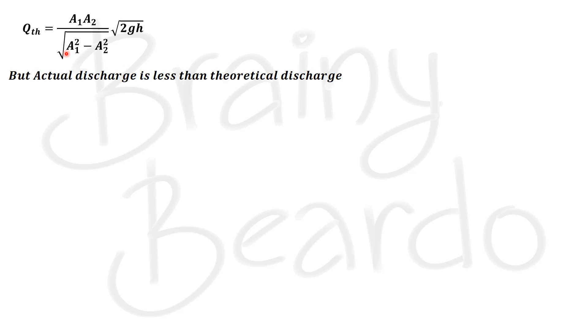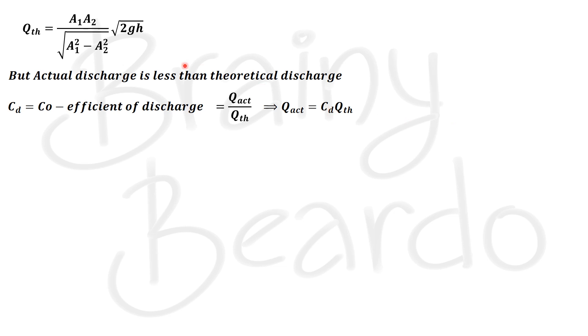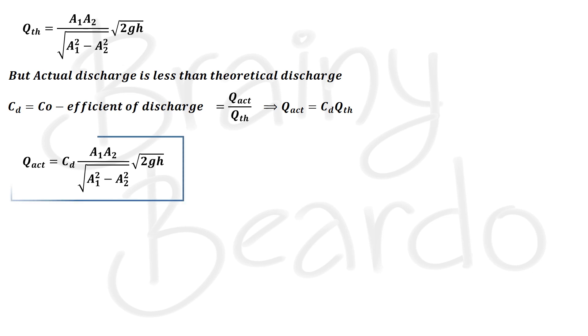We replace Q with Q_theoretical: Q_th = a1·a2/√(a1² − a2²) · √(2gh). Since the actual discharge is less than the theoretical discharge due to losses, we define a coefficient of discharge CD = Q_actual/Q_theoretical. Therefore, Q_actual = CD · a1·a2/√(a1² − a2²) · √(2gh). The value of CD is always less than 1.